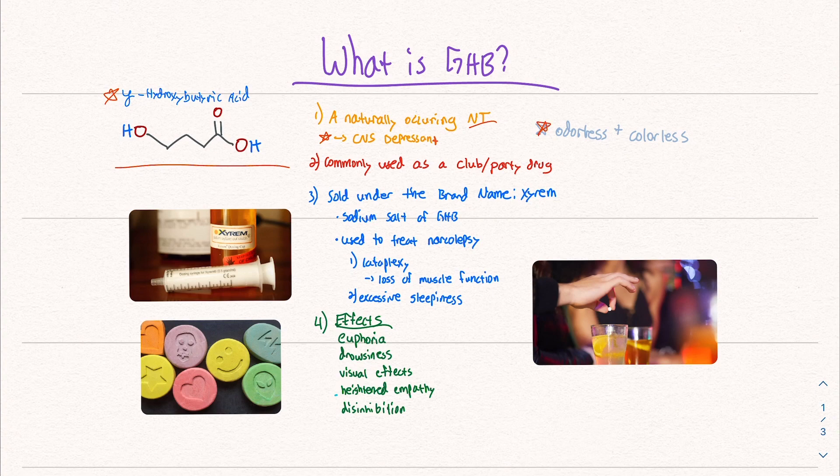These properties have implications when it comes to how the drug is used. It is commonly used as a party drug or club drug. It is also sold under the brand name Xyrem. This is a sodium salt of GHB.